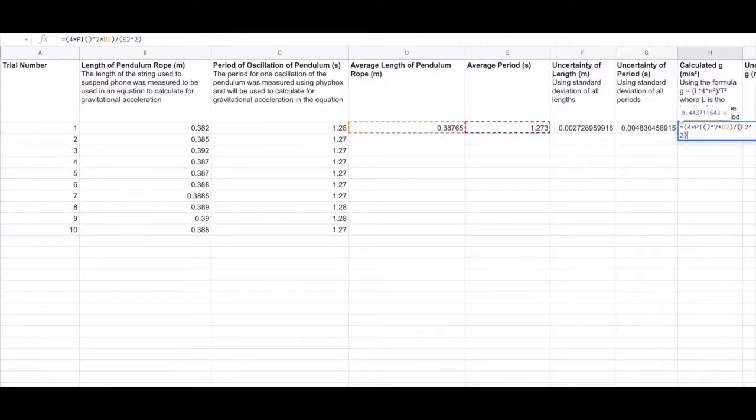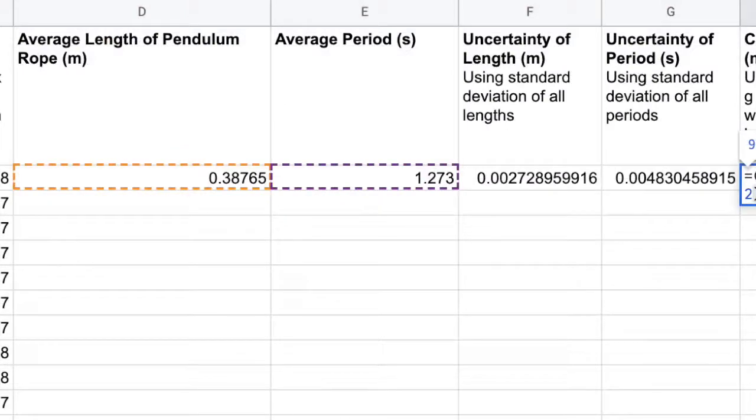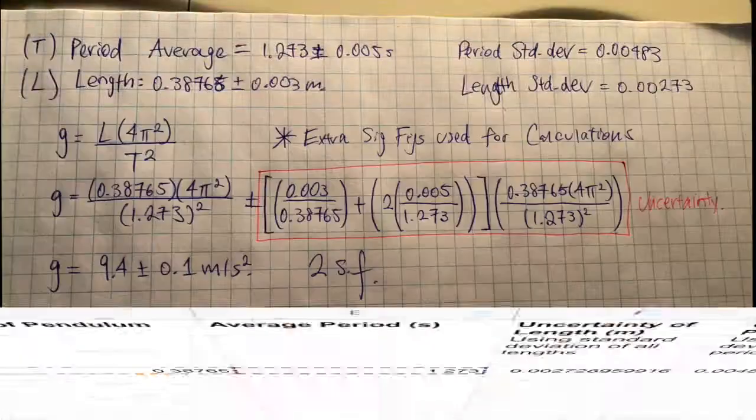The recorded data was processed in the spreadsheet with the formula gravity equals length times 4 pi squared divided by period squared, and we substituted each recorded value for the length and period into the Excel formula. The values of the periods and string lengths we found were averaged, and their absolute uncertainties were determined by calculating the standard deviation of each dataset.